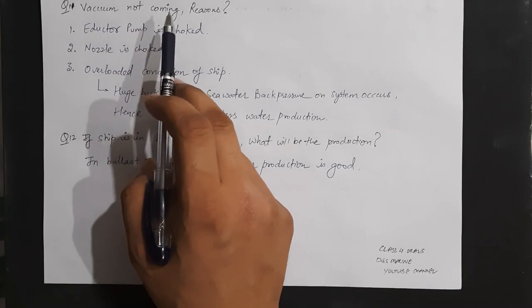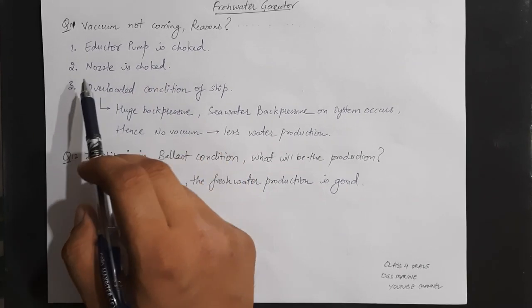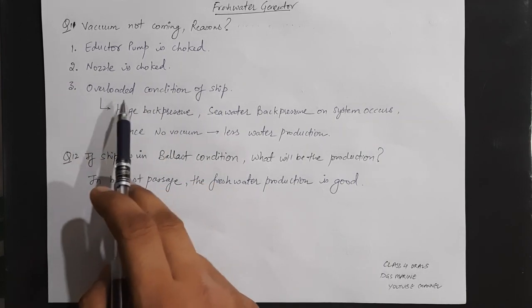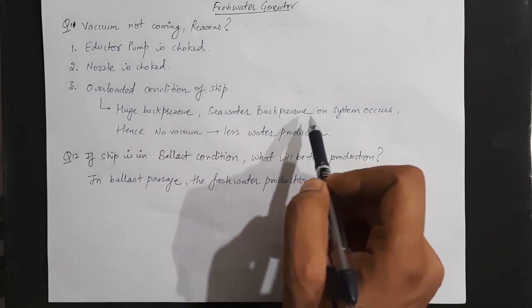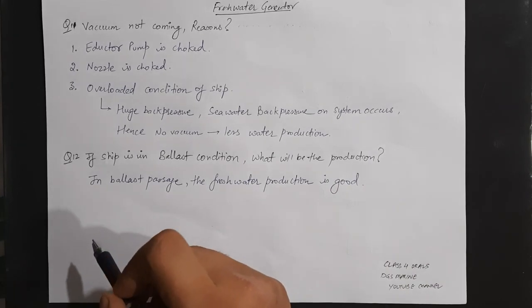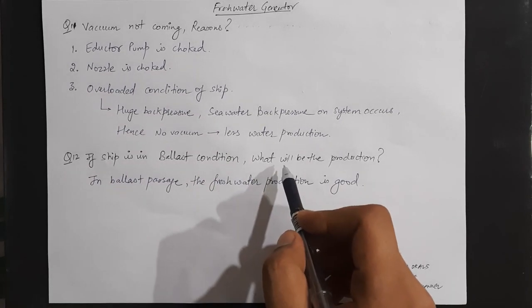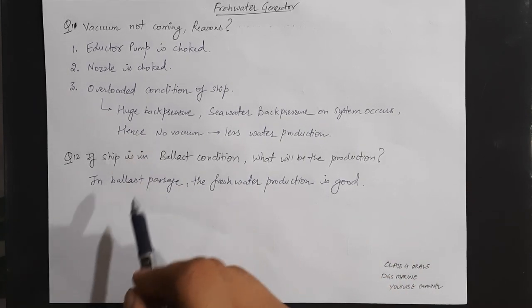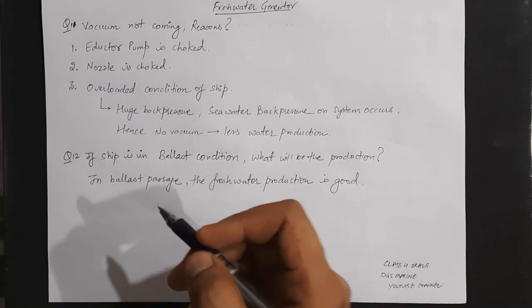Lastly, if the vacuum is not coming, the reasons are: first, the eductor pump is choked; second, the nozzle might be choked; third, the ship may be in an overloaded condition — in overloaded condition there is huge back pressure from seawater on the system, so not enough vacuum is produced and less fresh water is generated. Conversely, if the ship is in ballast condition, such as in tankers, fresh water production will be good because there is no huge back pressure, unlike the overloaded condition.